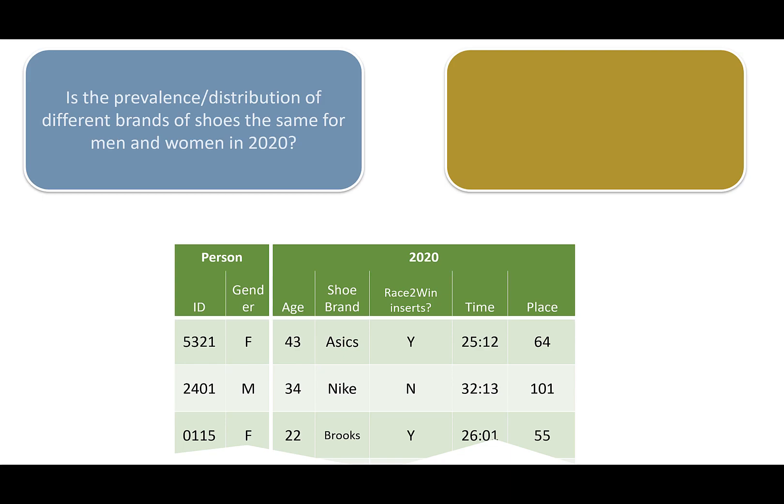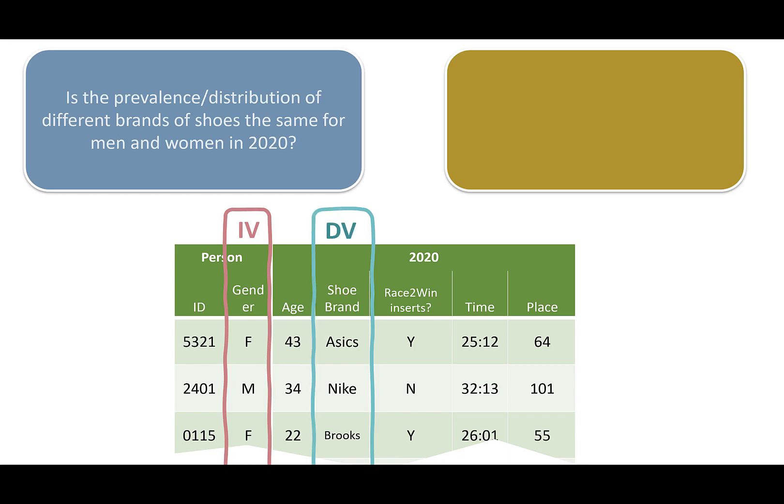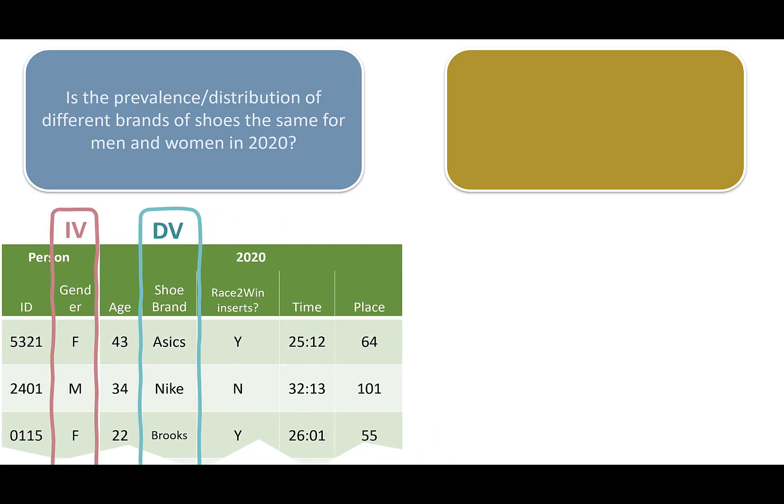So dealing with categorical dependent variables, we can ask questions like this: is the prevalence or distribution of different brands of shoes the same for men and women in 2020? Our independent variable could be gender and our dependent variable would be shoe brands. If we were to try to run a t-test on this, that's not possible — you can't take an average of ASICs and Nike. Those are categories. You can't run a non-parametric test for that either. What you do is count up each type of shoe among women and each type of shoe among men. So while our raw data looks as you see here, let's look at what our summarized or tabulated data could look like.